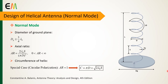Typically, the diameter of the ground plane for both operation modes should be at least three quarters of the wavelength. The axial ratio parameter, which is defined as the ratio of the magnitudes of the theta and phi electric field components, is given by this equation.